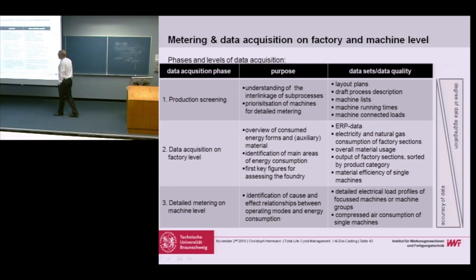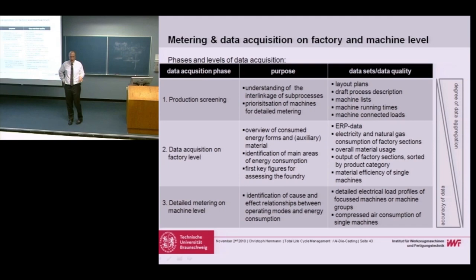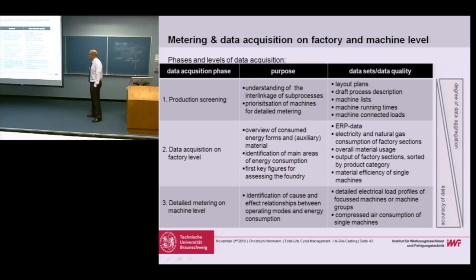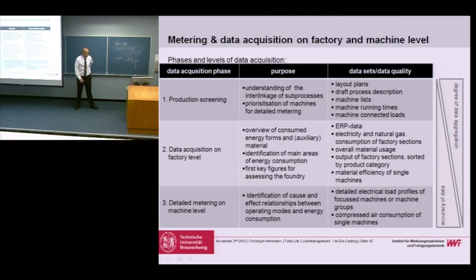In the third phase you start with detailed metering — actually measuring what happens inside machines. The purpose is to identify cause-and-effect relationships between operating modes and energy consumption, since the average nameplate value doesn't reflect how a machine actually performs when producing your specific part. This gives you detailed electrical load profiles for machines, machine groups, and auxiliary systems like compressed air. You get much greater data accuracy, but it also takes more effort.